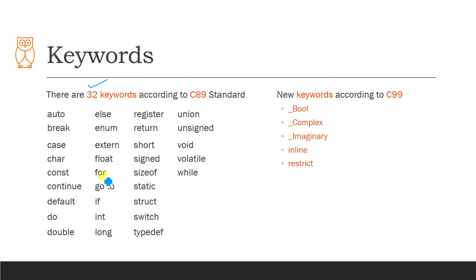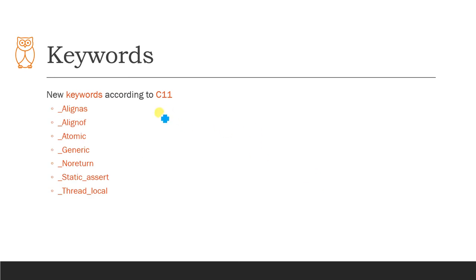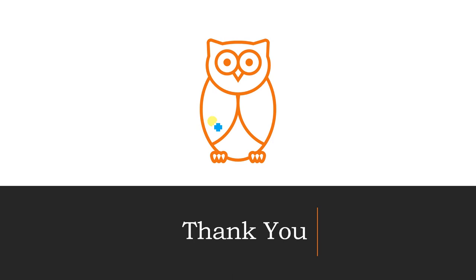You don't need to memorize all keywords — you will remember them automatically as you write programs. After C89, the C99 standard added five new keywords, and the C11 standard added seven more. That covers everything for today's class on C tokens: character sets, variables, identifiers, and keywords. If you have any doubts, please post your questions in the comment box. Thanks for listening, bye-bye.